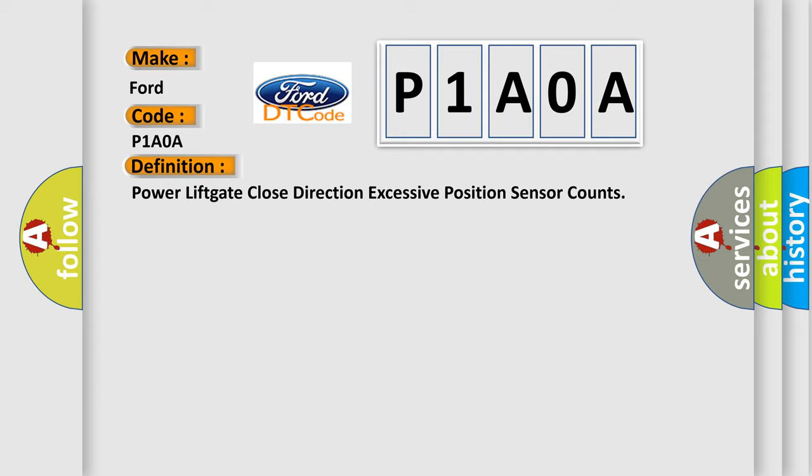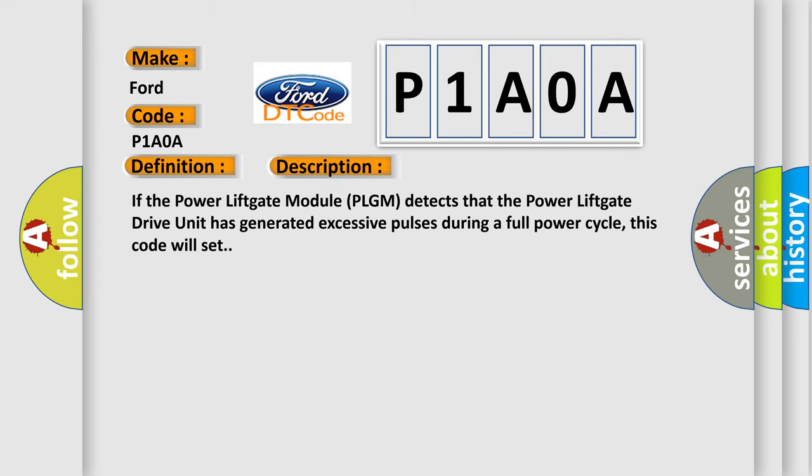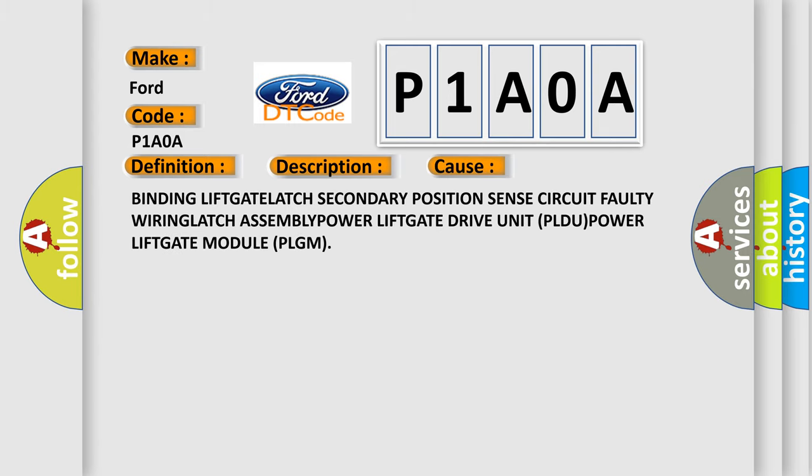And now this is a short description of this DTC code. If the Power Lift Gate Module (PLGM) detects that the Power Lift Gate Drive unit has generated excessive pulses during a full power cycle, this code will set. This diagnostic error occurs most often in these cases: Binding LIFTGATE LATCH Secondary Position Sense Circuit.